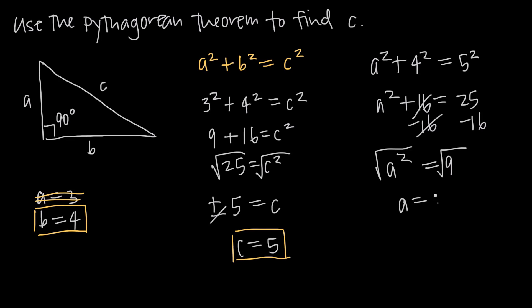But again, we can ignore the negative length, so we just get positive 3. You can see that that's originally what we started with. But the point of doing this is to show you that given any two lengths, whether a and b, or b and c, you can always use the Pythagorean theorem to find the length of the third side.